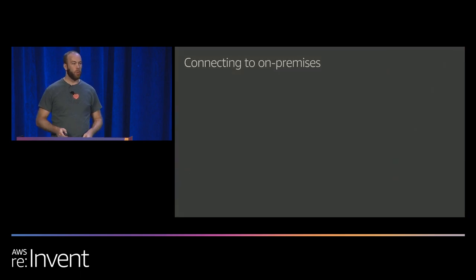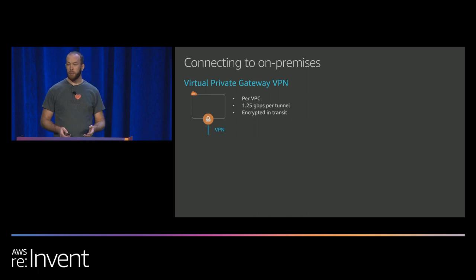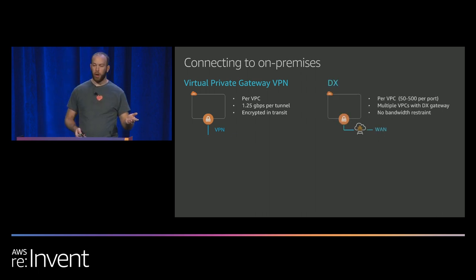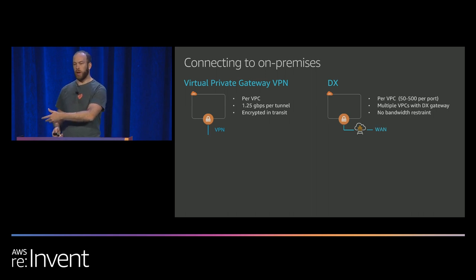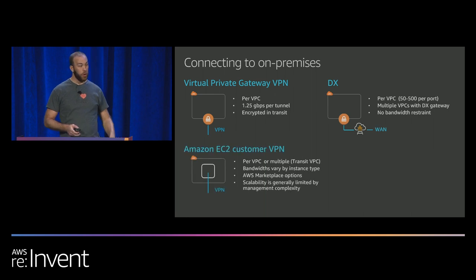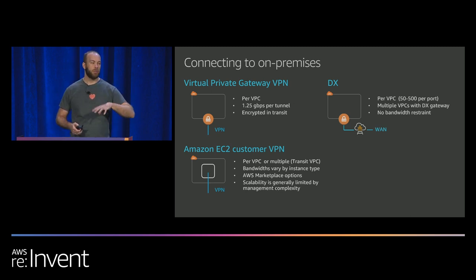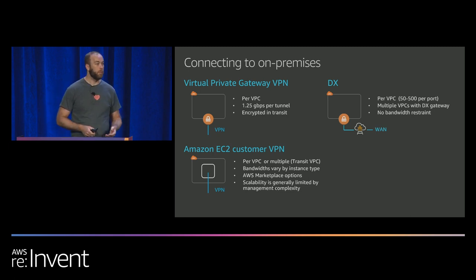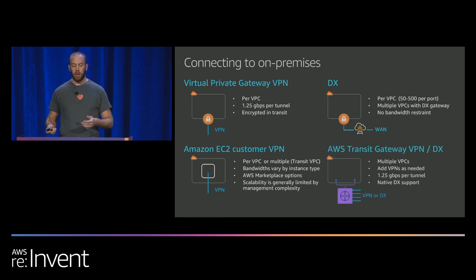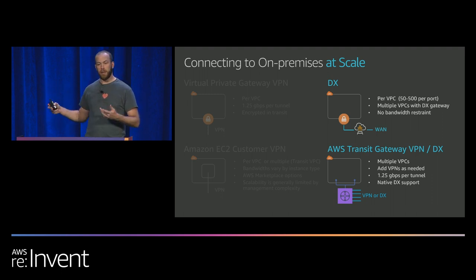Now let's connect this to on-premises. We have a lot of options: VPN or Direct Connect through a virtual private gateway — only 1.25 gigs per tunnel, a little limited. Or Direct Connect through VGW or with Direct Connect Gateway, which scales up to 500 VPCs. You can also create your own EC2-based VPN if you have a firewall or router vendor you want to use — historically used for Transit VPC to get around limitations that Transit Gateway solved. The ones we'll focus on are Direct Connect and Transit Gateway because they scale better.